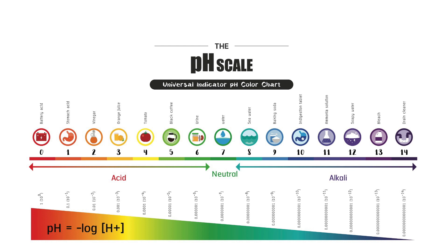Stomach acid, which is pH 1, has 10 times the number of H⁺ ions than vinegar, which is pH 2. And vinegar, which is pH 2, has 10 times the number of H⁺ ions than orange juice, which is pH 3. Remember the equation: pH is equal to minus log of the H⁺ concentration, and the more H⁺ ions there are, the more acidic and the lower the pH.